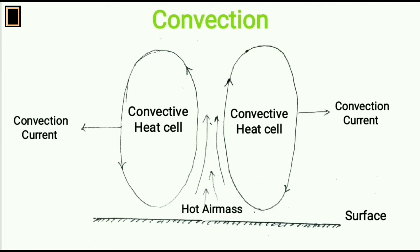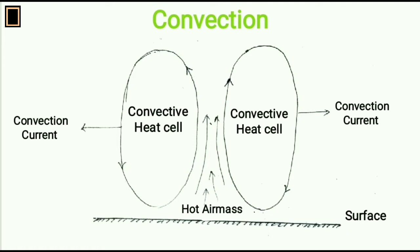Heat zones: Temperature decreases gradually from equator to the poles. This is because of the difference of the angle of incidence of sunlight. The earth has been divided into three heat belts on the basis of the amount of heat it receives from the sun: torrid zone, temperate zone, and frigid zone.